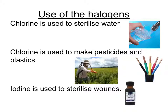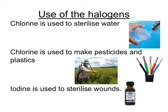Chlorine is used to sterilise water. Do not say that chlorine is used in swimming pools — it very rarely is these days and you will not get the mark if you say this. It's used to sterilise water, in other words it's used to kill the bugs in your drinking water. Secondly, chlorine is used to make pesticides. Many chemicals used by farmers contain chlorine atoms, and it's also used to make plastics — specifically PVC, or polyvinyl chloride.